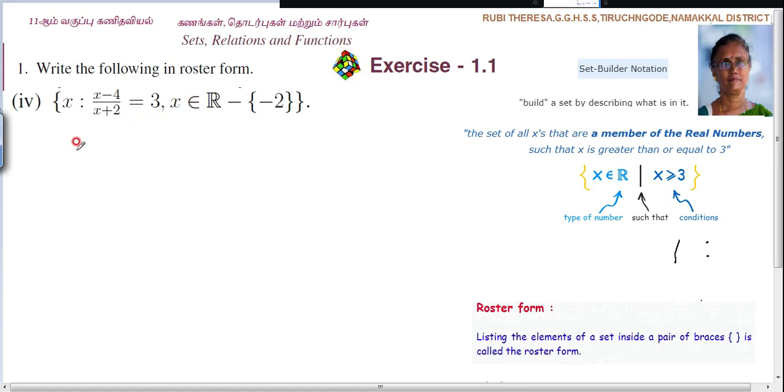So first let us take the condition. How you have to say it? This is x such that. Otherwise you can say the set of all x. They have written like this: the set of all x that are a member of real numbers, such that x is greater than or equal to 3. Instead of doing like this, just simply you can say x such that x minus 4 divided by x plus 2 equals 3. x is an element of real numbers.